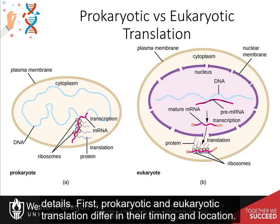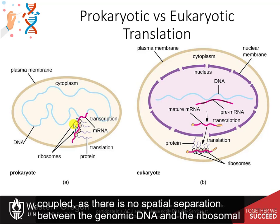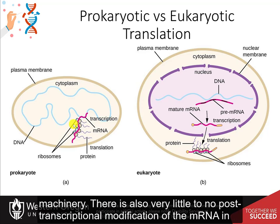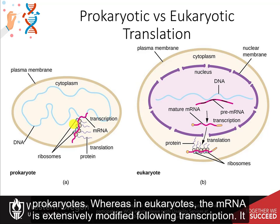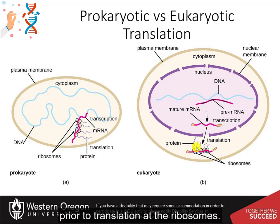First, prokaryotic and eukaryotic translation differ in their timing and location. In prokaryotic systems, transcription and translation are coupled as there is no spatial separation between the genomic DNA and the ribosomal machinery. There is also very little to no post-transcriptional modification of the messenger RNA in prokaryotes. Whereas in eukaryotes, the messenger RNA is extensively modified following transcription, and it then has to be translocated into the cytoplasm prior to translation at the ribosomes.